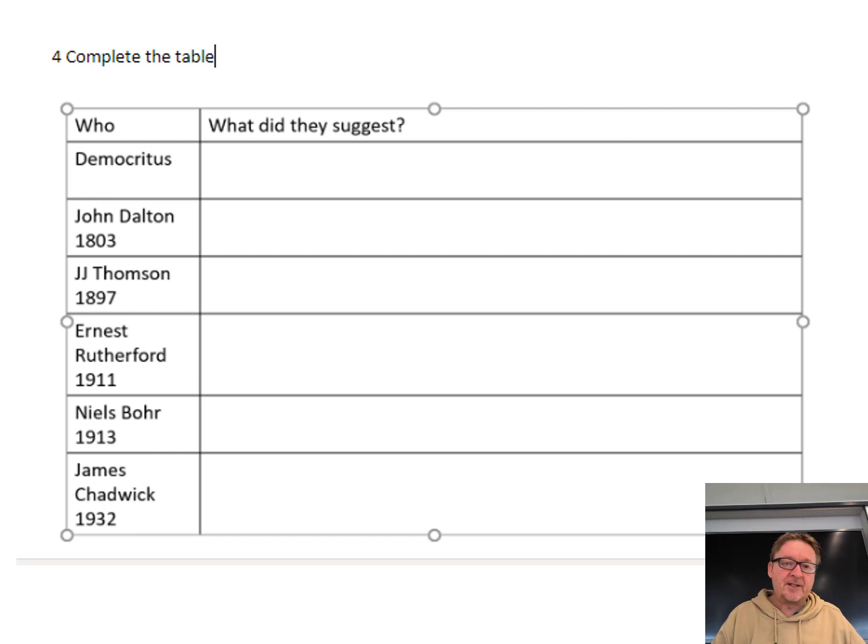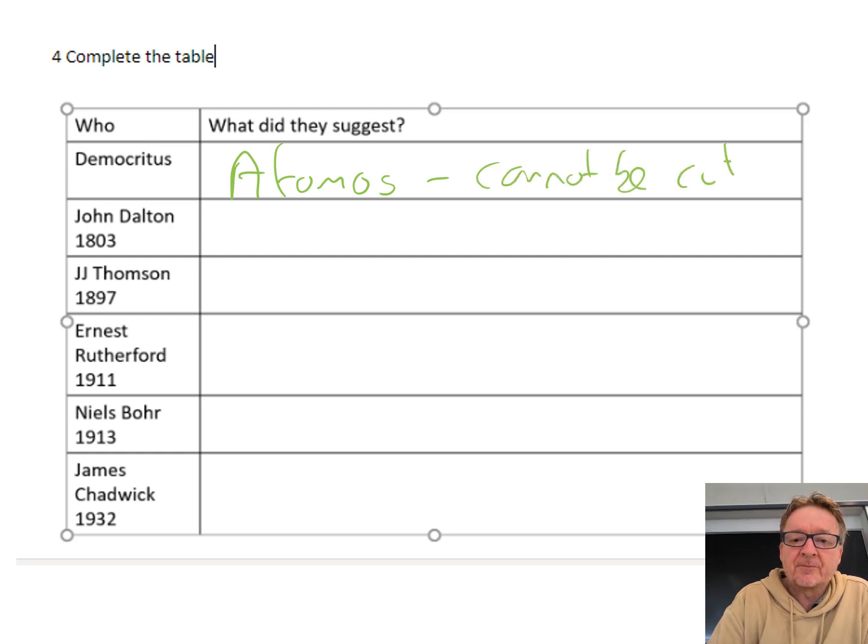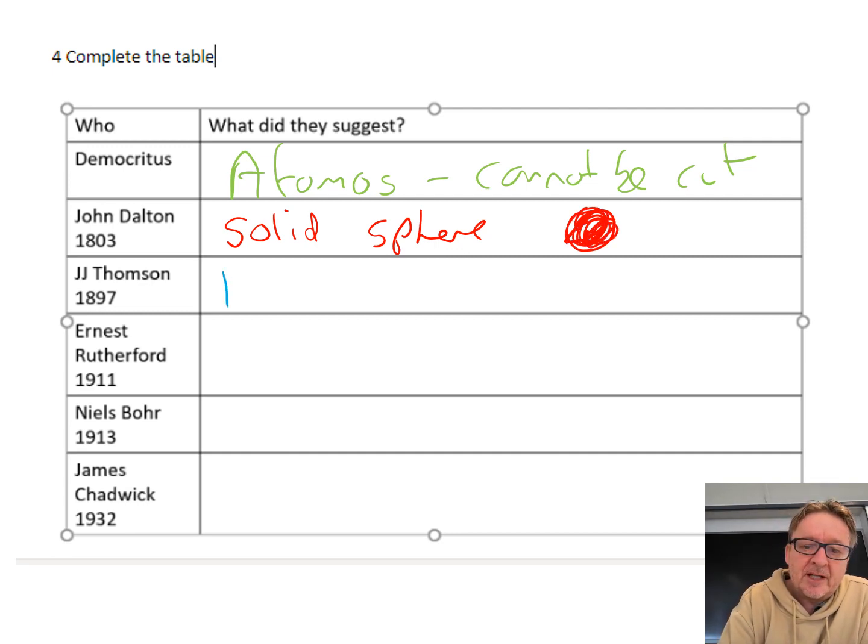Complete the table: what did these people suggest? Democritus came up with atomos, which means cannot be cut. John Dalton came up with the idea that the atom was a solid sphere. JJ Thomson came up with the principle of a plum pudding.